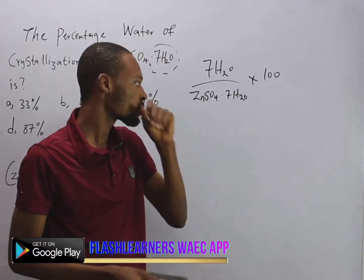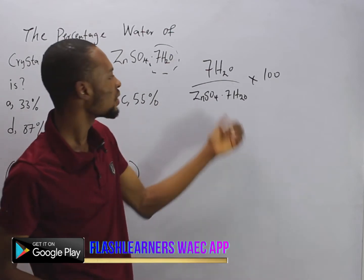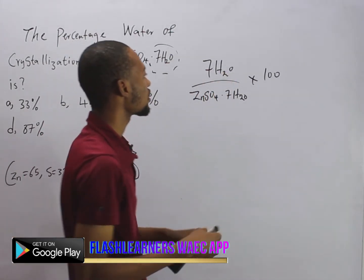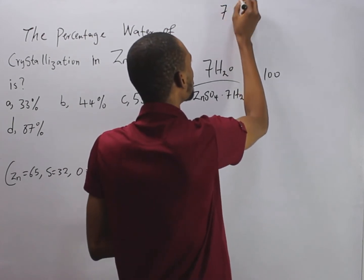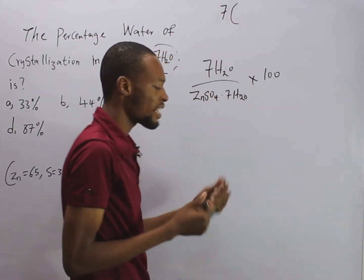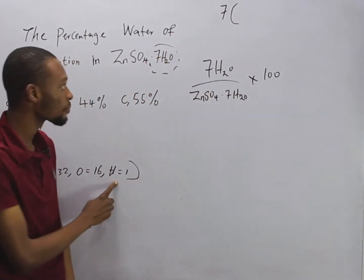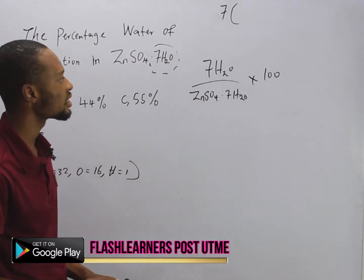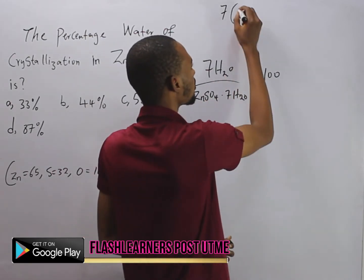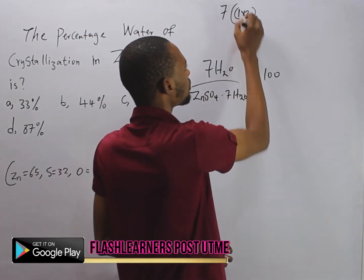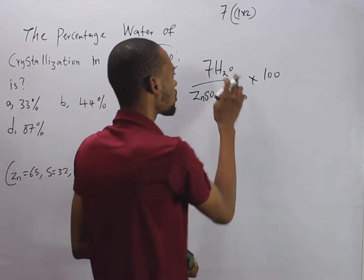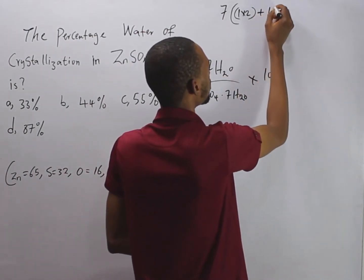If you have this, first we calculate the mass of 7H₂O. So 7H₂O is simply 7 times—the mass of hydrogen is 1 and oxygen is 16. This means we have 2 hydrogen: 1 times 2 because the mass of hydrogen is 1 and we have 2 hydrogen, plus oxygen.